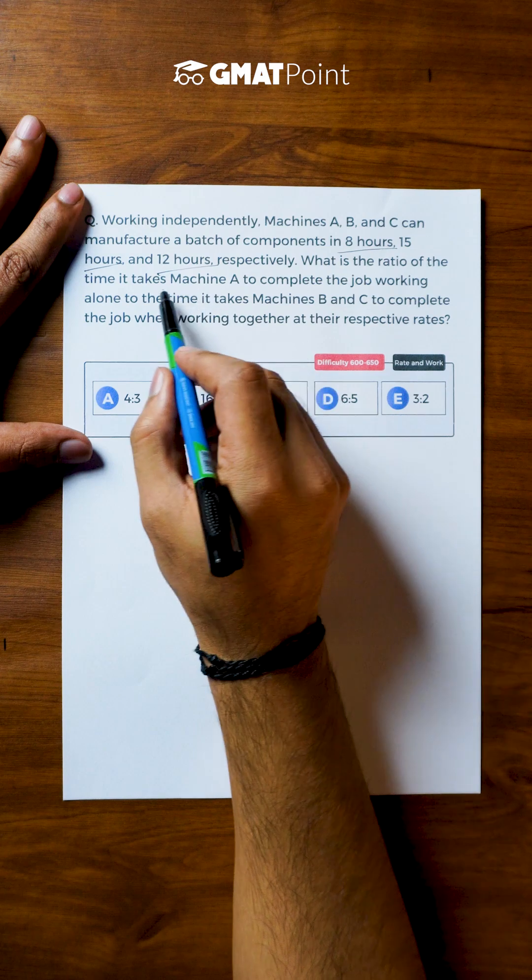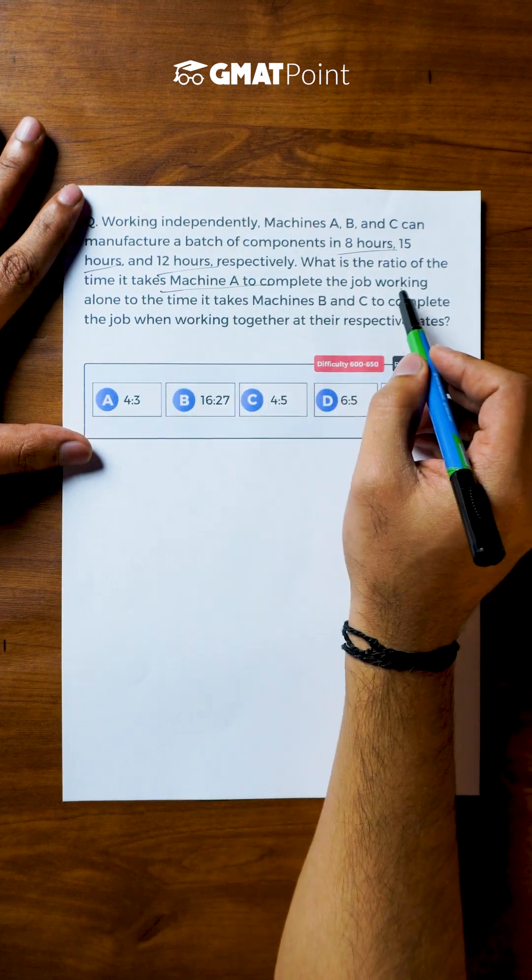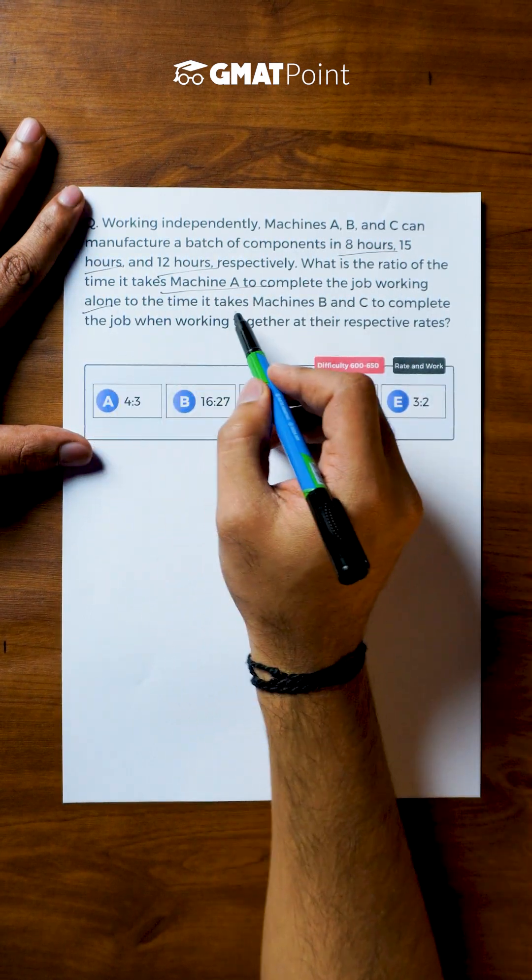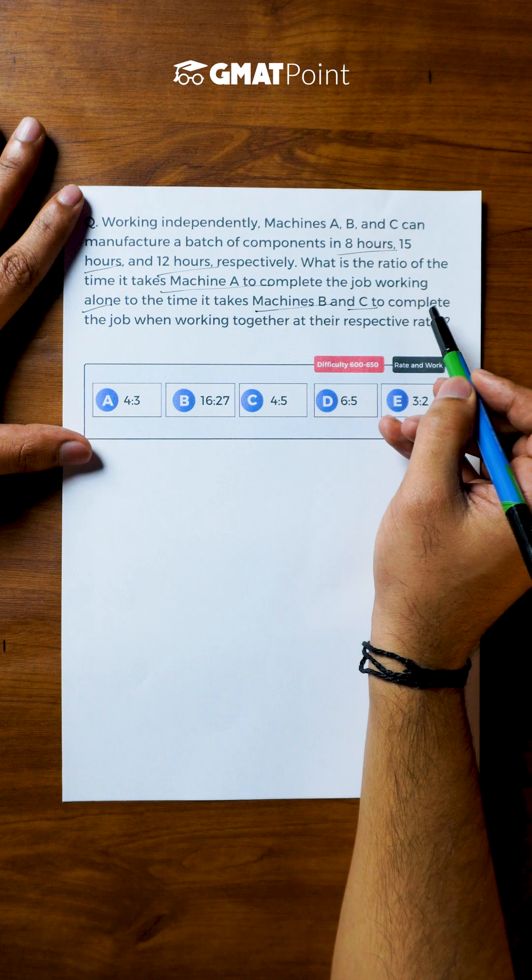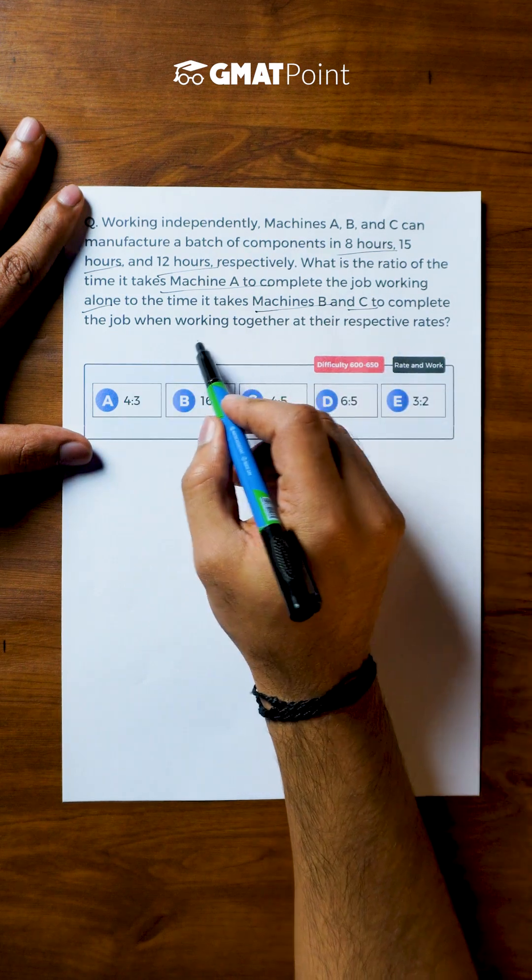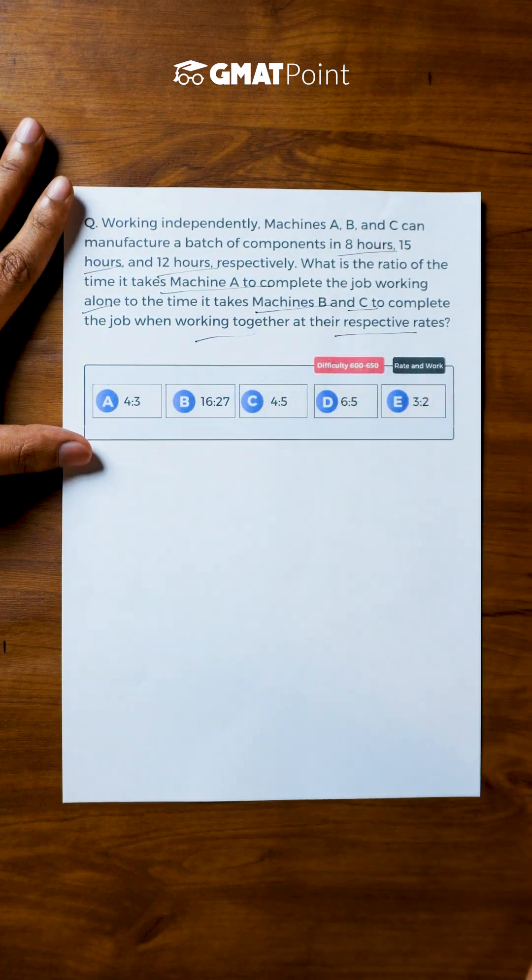What is the ratio of the time taken by machine A to complete the job working alone to the time taken by machines B and C together to complete the job at their respective rates?